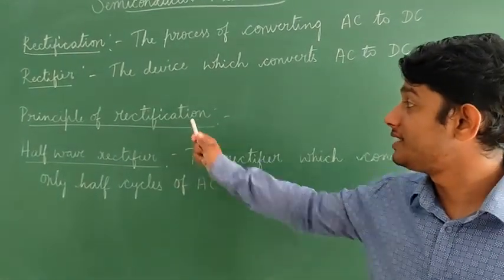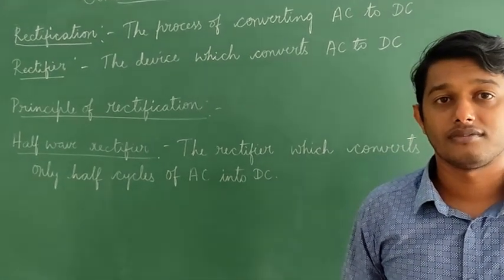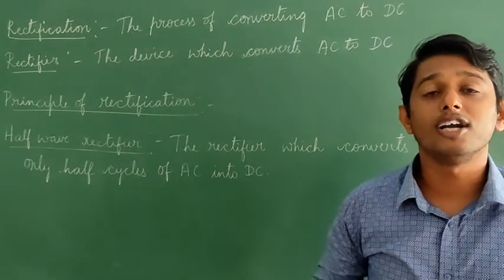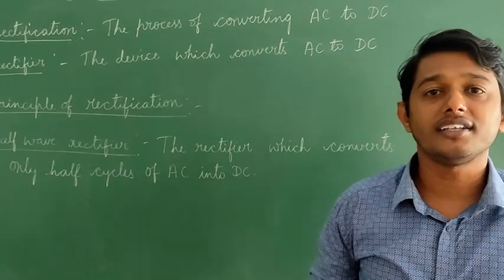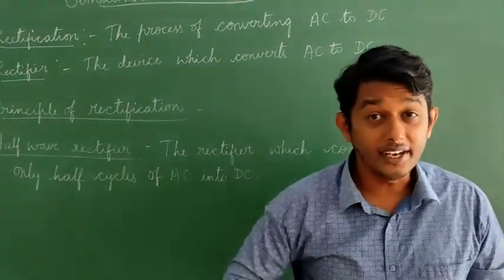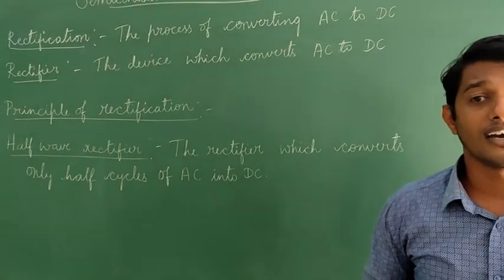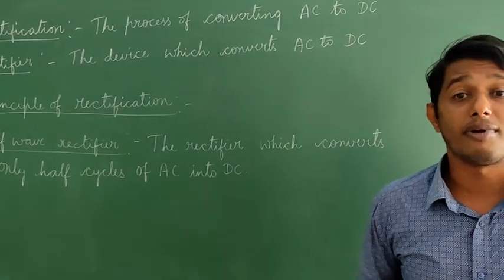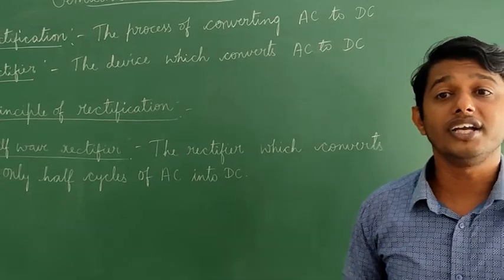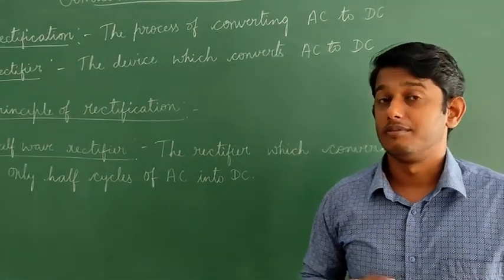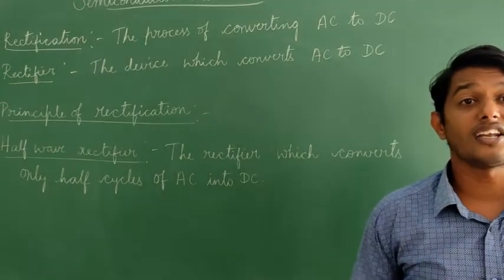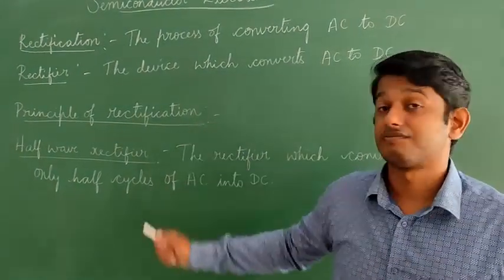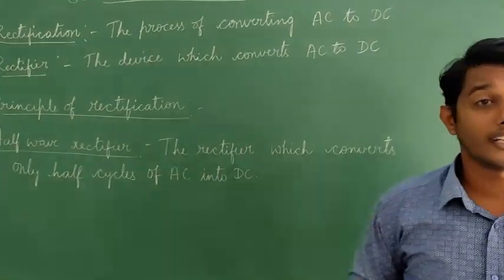The next topic is the principle of rectifier. A semiconductor diode conducts current during forward bias and does not conduct current during reverse bias. That is, a diode has a unidirectional conducting property. This is the principle of rectification.